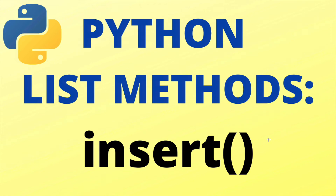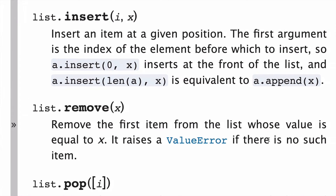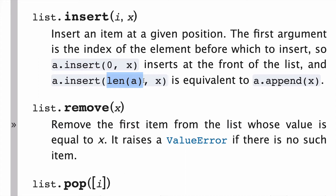In this video, we'll look at the insert list method in Python. Starting with the docs: insert takes two arguments. The first argument must be an integer signifying the index or place in the list where you'll insert x, and x can be any object — a string, a dictionary, etc. If you insert at index 0, you'll be inserting at the front of the list. And if you insert using len, you'll be inserting at the end of the list, which is the equivalent of the append list method.